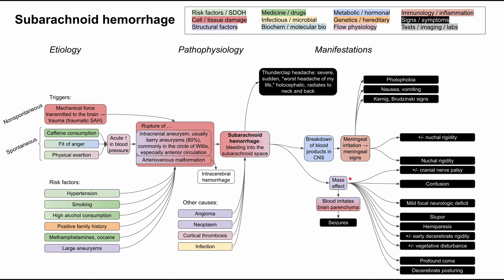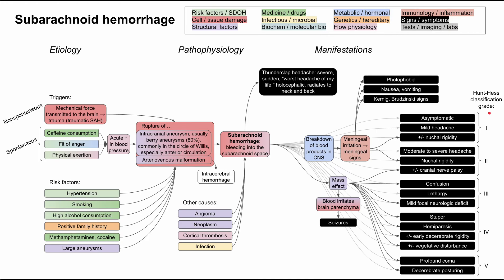The mass effect of the blood also irritates the brain parenchyma itself, which can lead to seizures. There is a classification system used to grade the severity of subarachnoid hemorrhages. Grade 1 is the least severe — asymptomatic or with a mild headache plus or minus some nuchal rigidity. You can work all the way down to Grade 5, the most severe, which includes decerebrate posturing and profound coma.